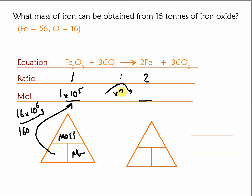Multiply that by 2 to get the amount of iron. So that's the amount in mole of the iron. We want to work out the mass. So we can take the mole and multiply it by the Mr. So that's 2 times 10 to the 5.